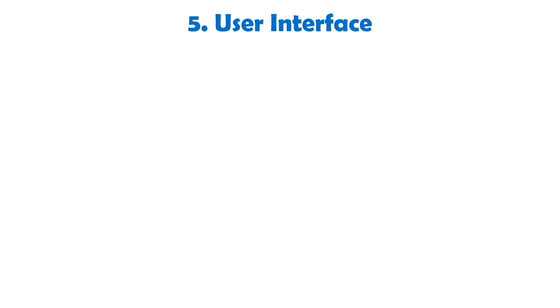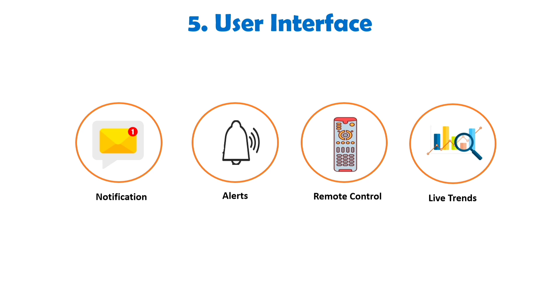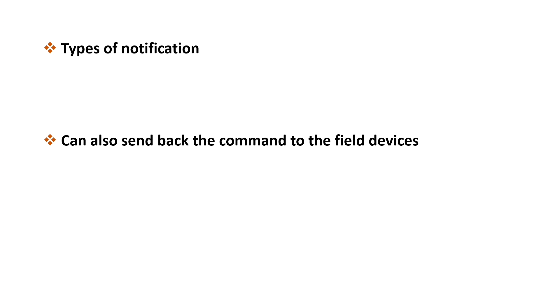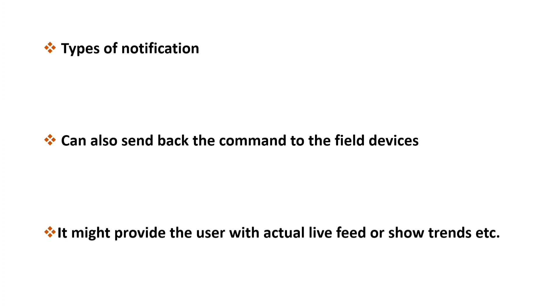Let's explore the fifth and last component of IoT, which is the user interface. The user interface enables end users to monitor and control field devices through various functionalities such as notifications, alerts, remote control, and live trends. The processed information is presented to the end user through a user-friendly application, which can trigger alarms or send notifications via email or text messages. The application may also offer an interface for the user to send instructions back to the system, such as adjusting the temperature or providing water to plants based on moisture readings. Furthermore, the user interface may provide real-time feeds or display trends, aiming to enhance the user experience by providing intuitive controls and visual representation of the data.